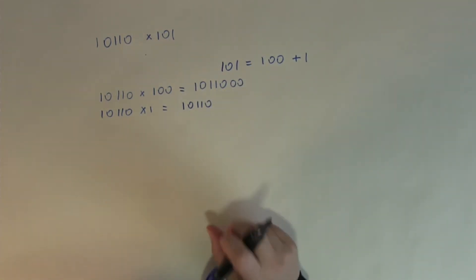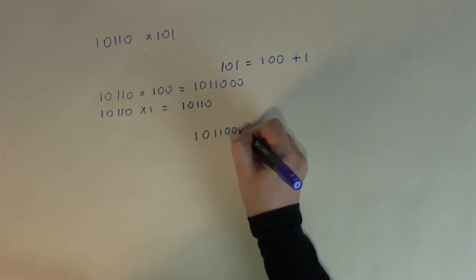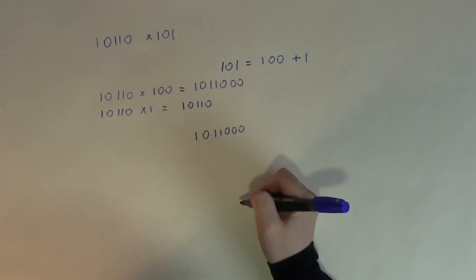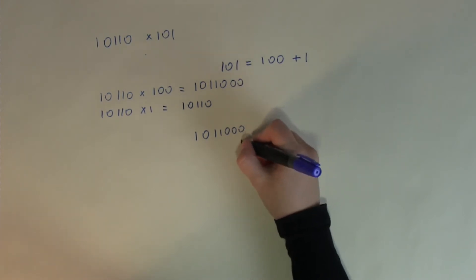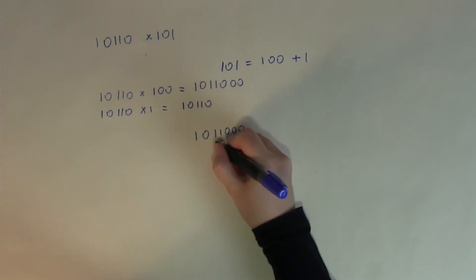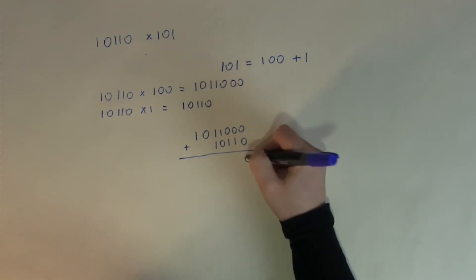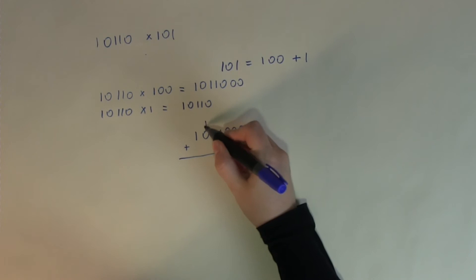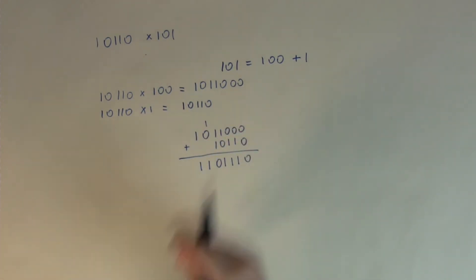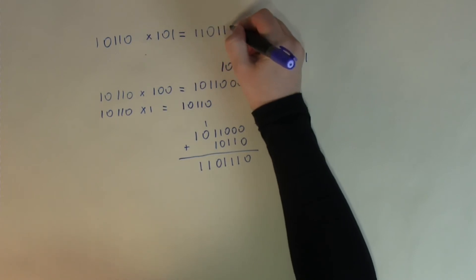The last step — probably the most complicated — is the addition. Copy down the two numbers, making sure the digits line up properly with the smallest place values under each other. Then add using our rules: 0+0=0, 0+1=1, 0+1=1, 1+0=1, 1+1=0 carry 1, 1+0=1, 1+nothing=1. So the answer to this multiplication is 1101110.